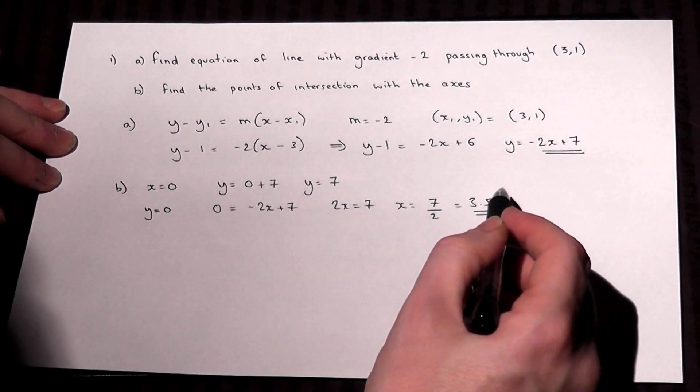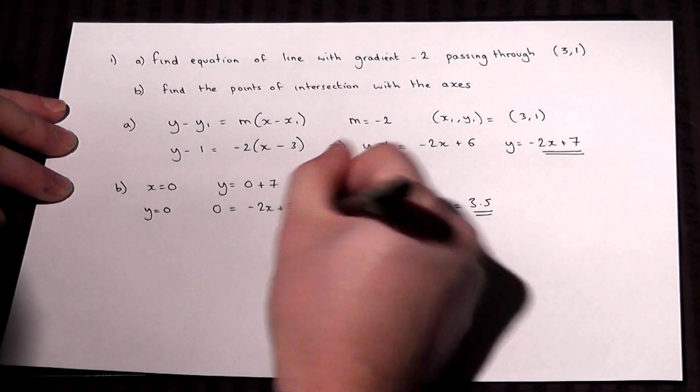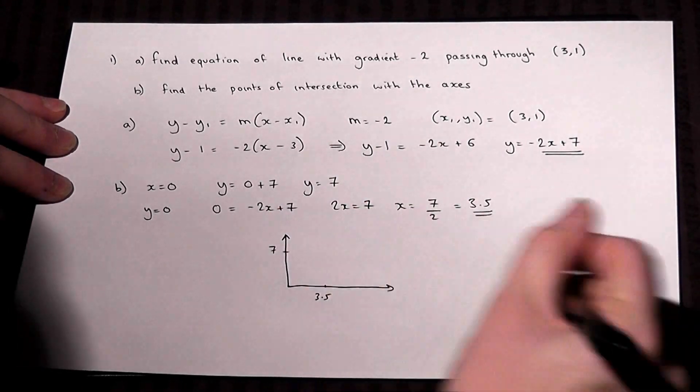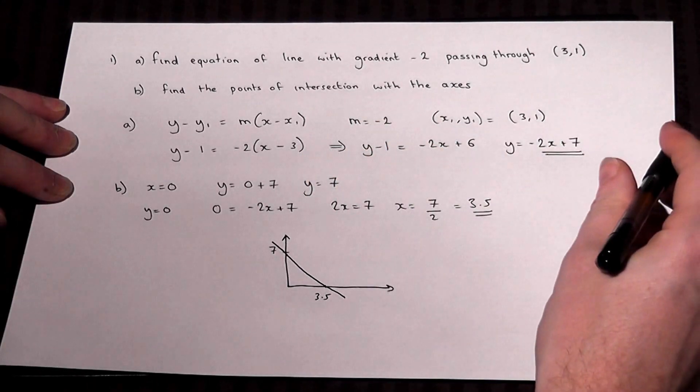So these are the axis intercepts. Basically, if you imagine a pair of axes, the line will pass through 7 on the y-axis and 3.5 on the x-axis. And that, therefore, is a sketch of our line.